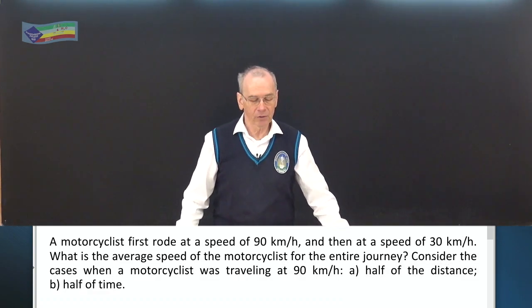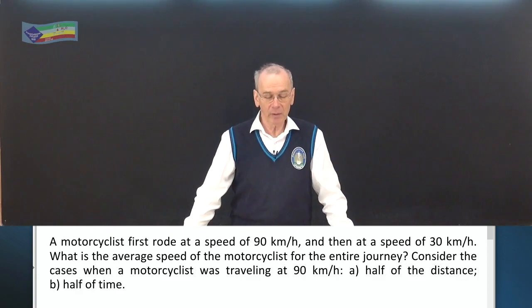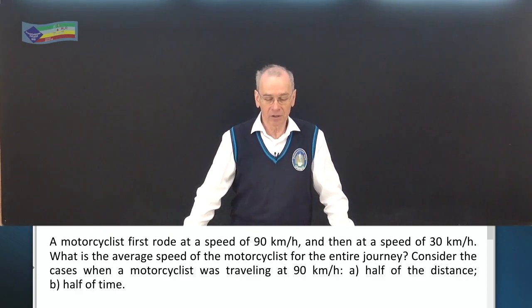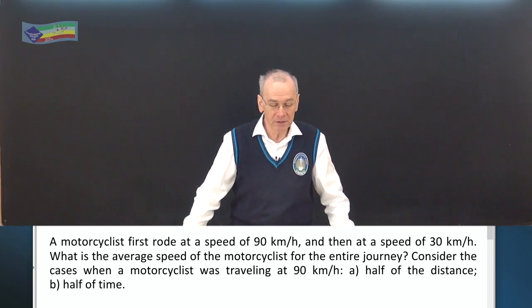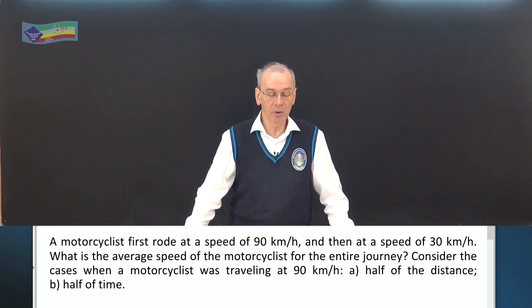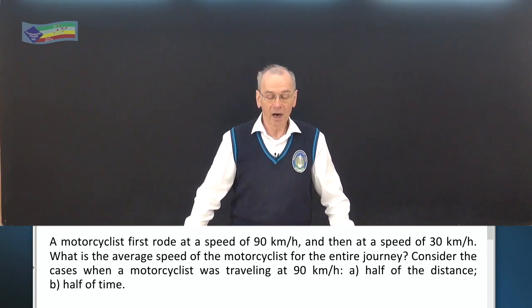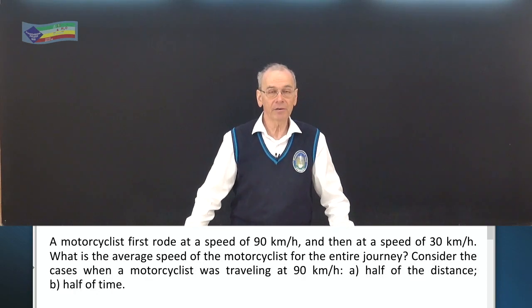A motorcyclist first rode at a speed of 90 km per hour and then at a speed of 30 km per hour. What is the average speed of the motorcyclist for the entire journey? Consider two cases: (a) the motorcyclist was travelling at 90 km/h for half of the distance, and (b) for half of the time.